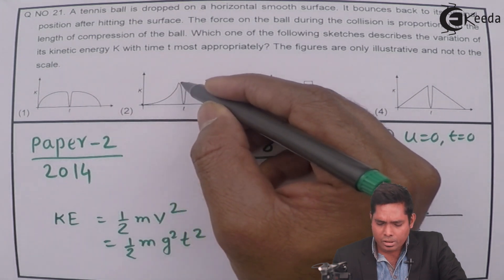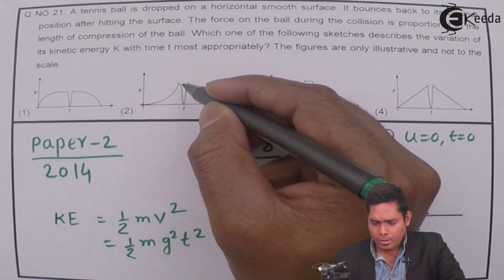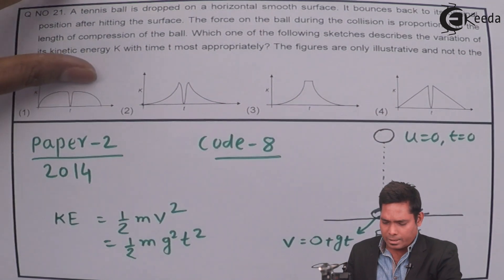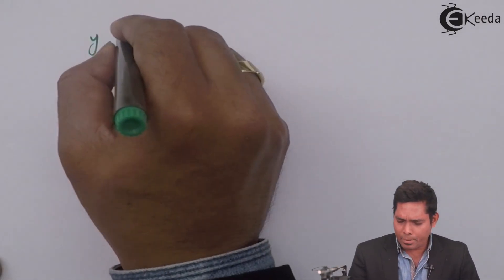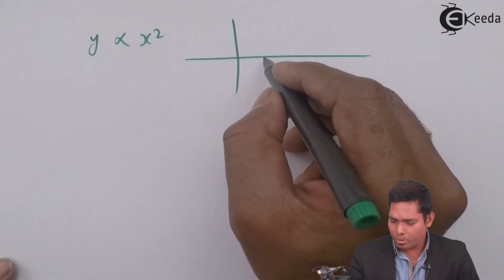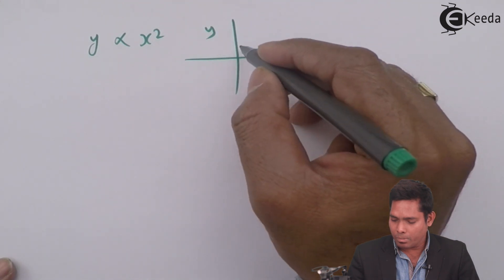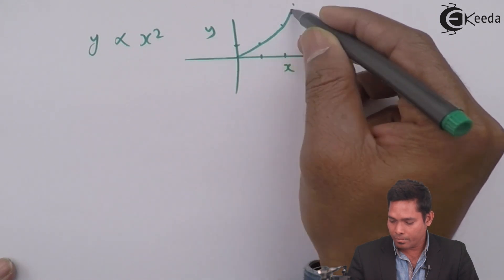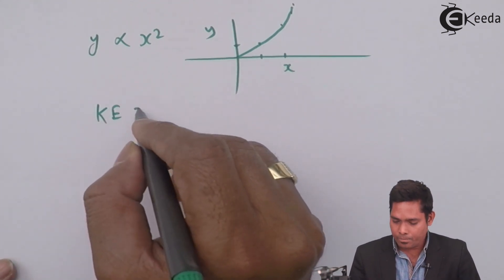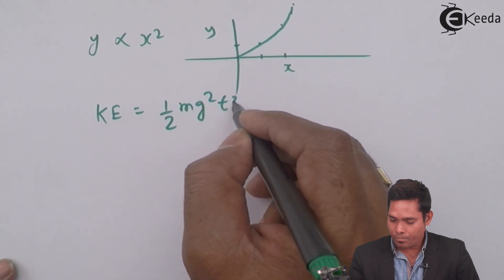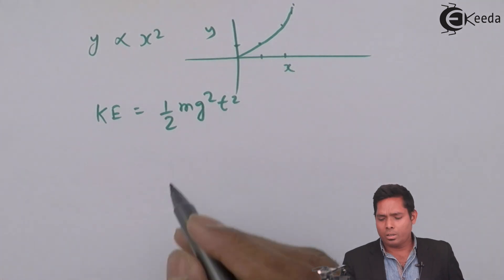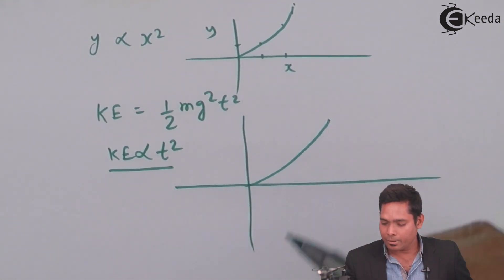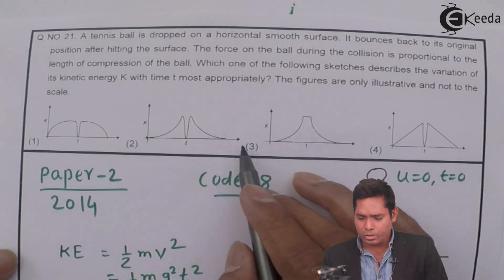So this parabolic path narrows our choice. The curve is not flat — y ∝ x² looks like this: at x=1, y=1; at x=2, y=4. The graph will start from the origin and curve upward like that. So we are left with two choices — options 2 and 3 — and we need to pick one. Kinetic energy is proportional to t squared, which is consistent with that shape.